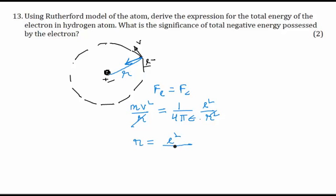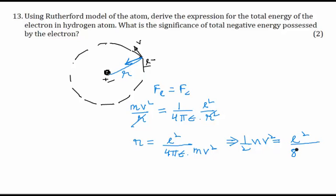We know that kinetic energy is ½mv². From the force equation we can derive that ½mv² is equal to e²/(8πε₀r). So this is the kinetic energy of the electron.